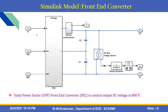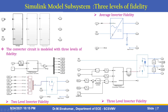The next component is the front-end converter. The second subsystem of the DC charging station is the front-end converter — a unity power factor front-end converter to control the output DC voltage at 800 volts. The converter circuit is modeled with three levels of fidelity: first is average inverter fidelity, second is two-level inverter fidelity, and third is three-level inverter fidelity.